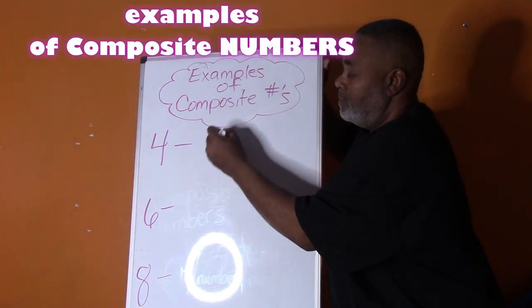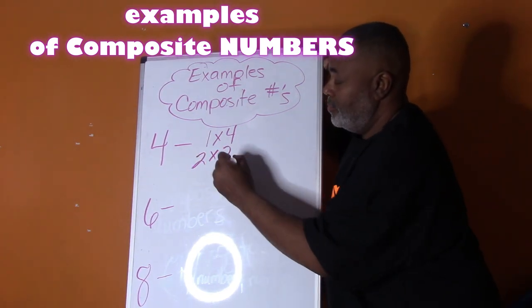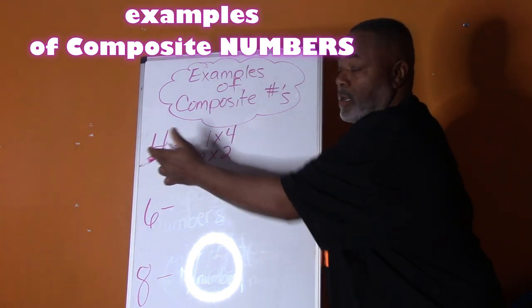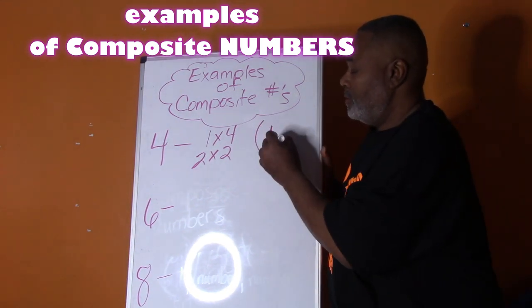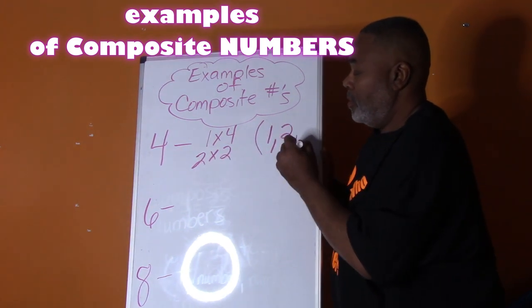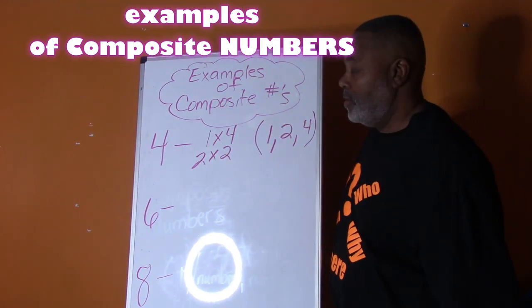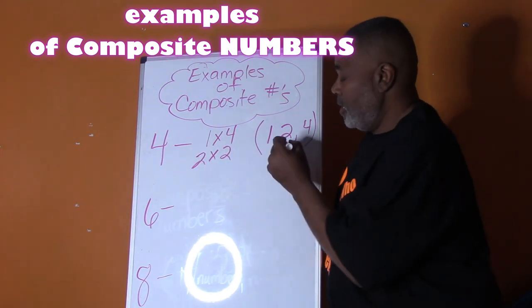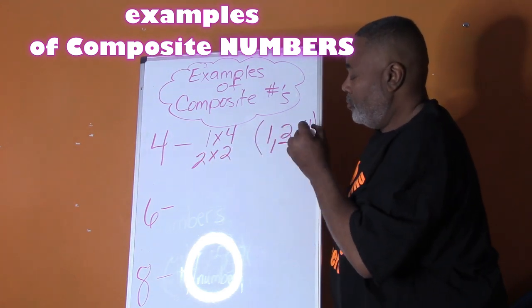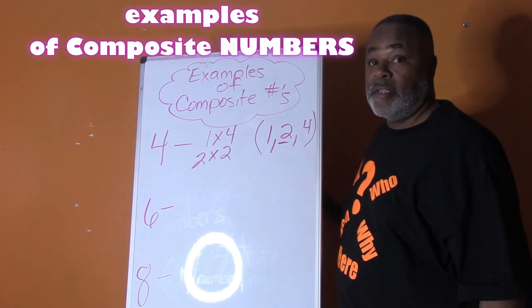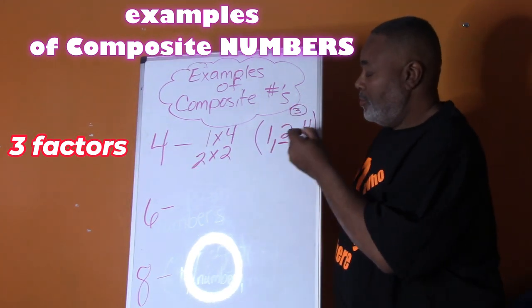One times four, and two times two. So these are the numbers we multiply to give us four. The factors of four are one, two, and four. Notice that we don't write the second two — if you have two of the same numbers, we only need one of the factors. So four has three factors: one, two, and four.